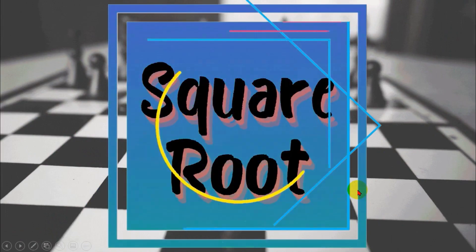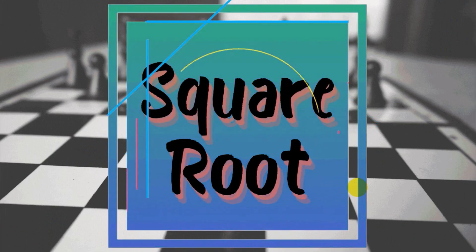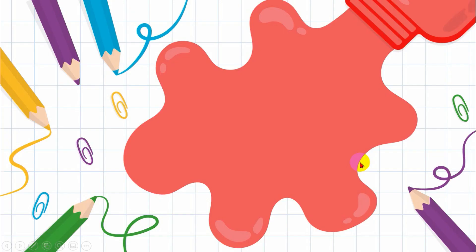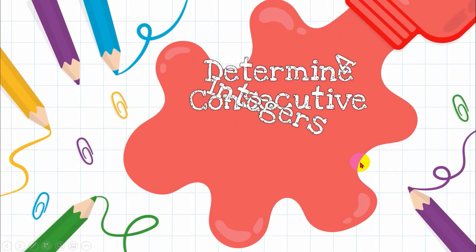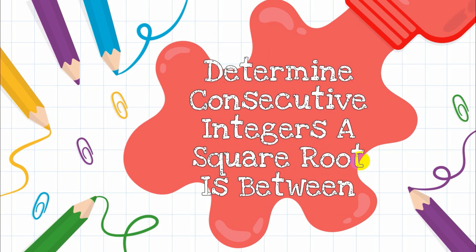Hi, hello, good day to everyone. Today we'll still have a topic on square roots, however we'll be focusing on determining consecutive integers that a square root is between. What we're going to do is find two consecutive integers where the square root can be found. Please stay tuned and keep on watching.